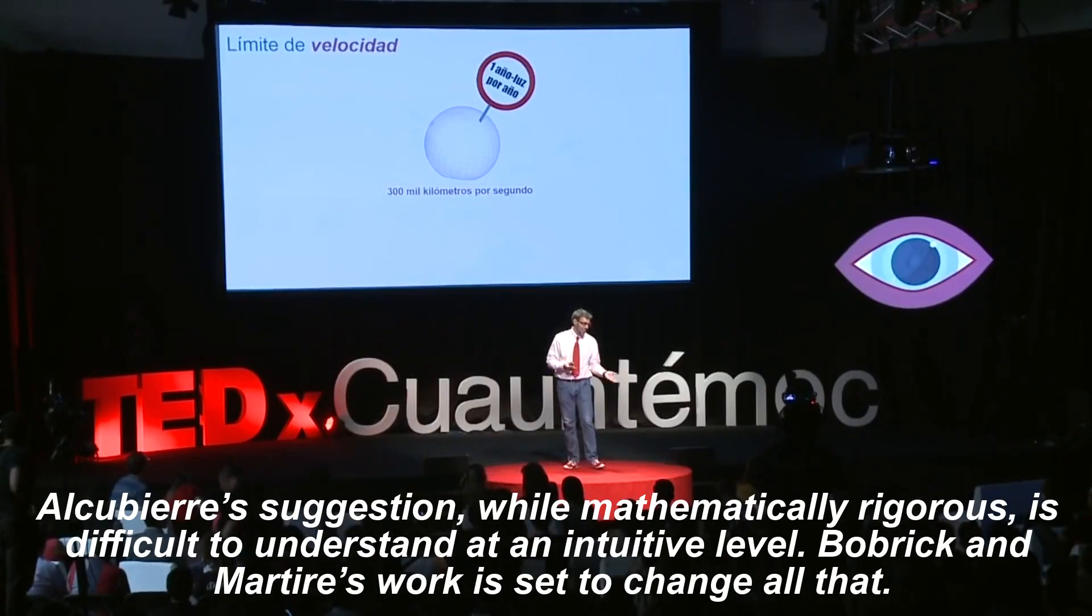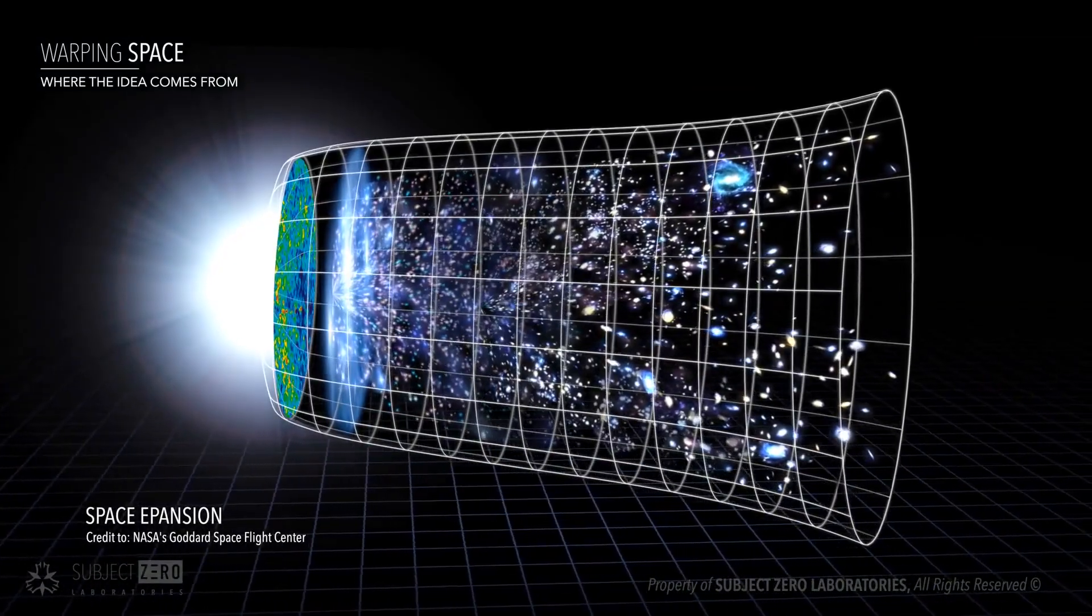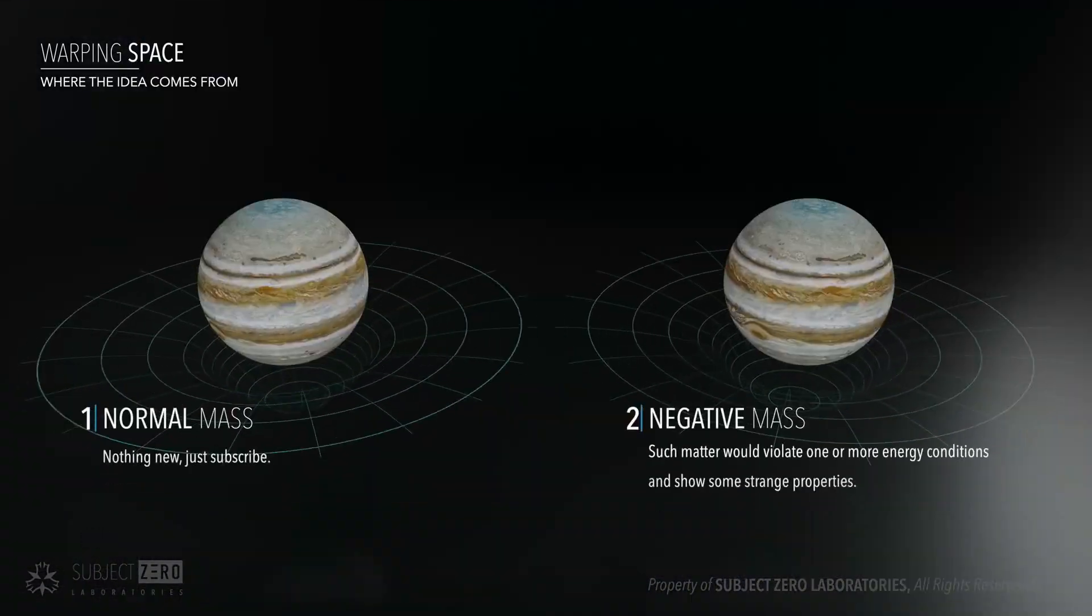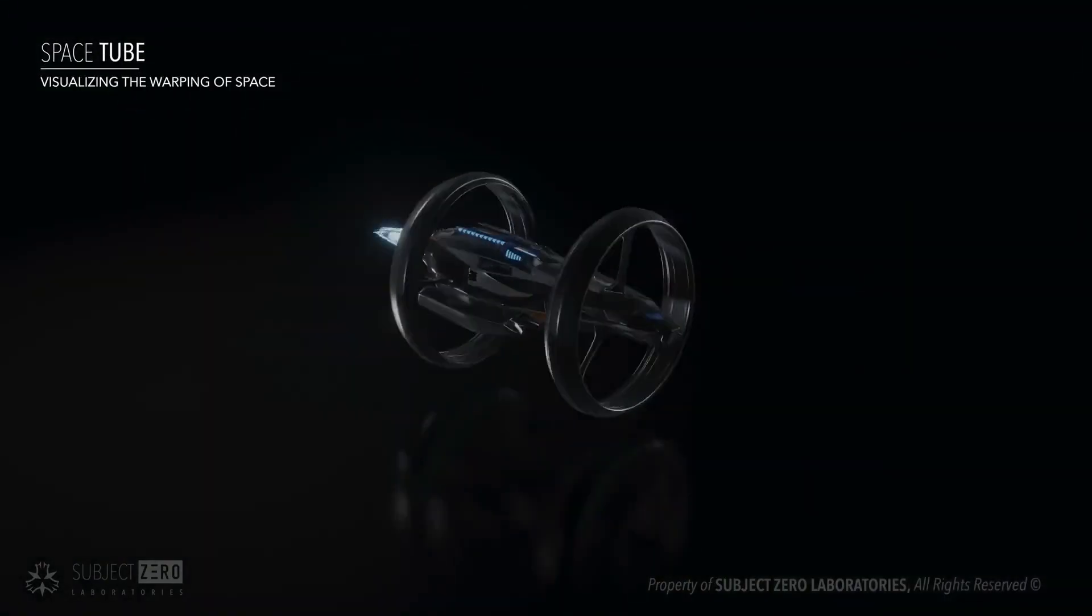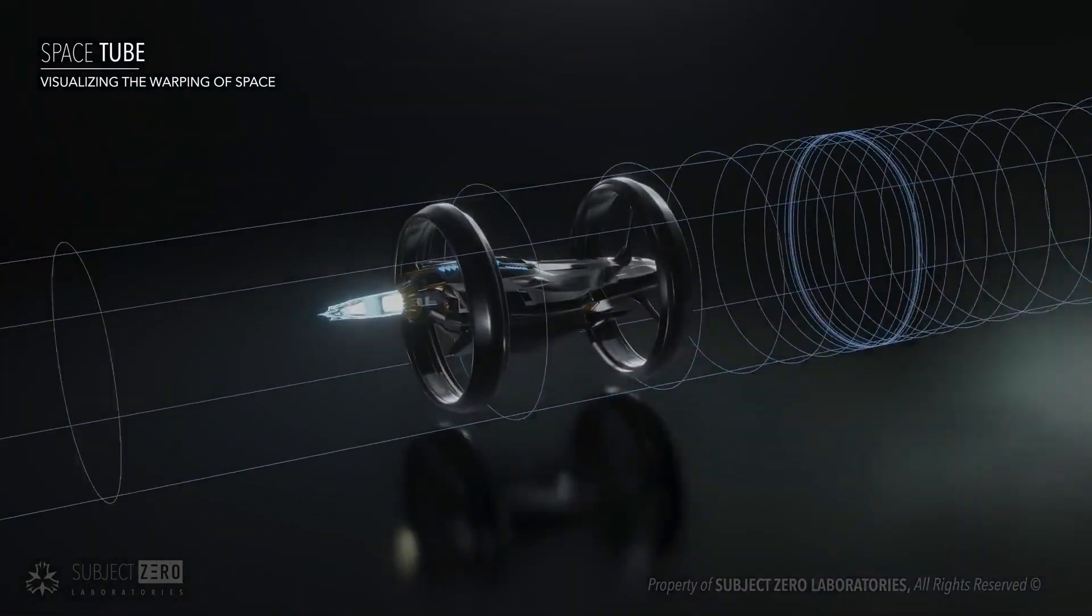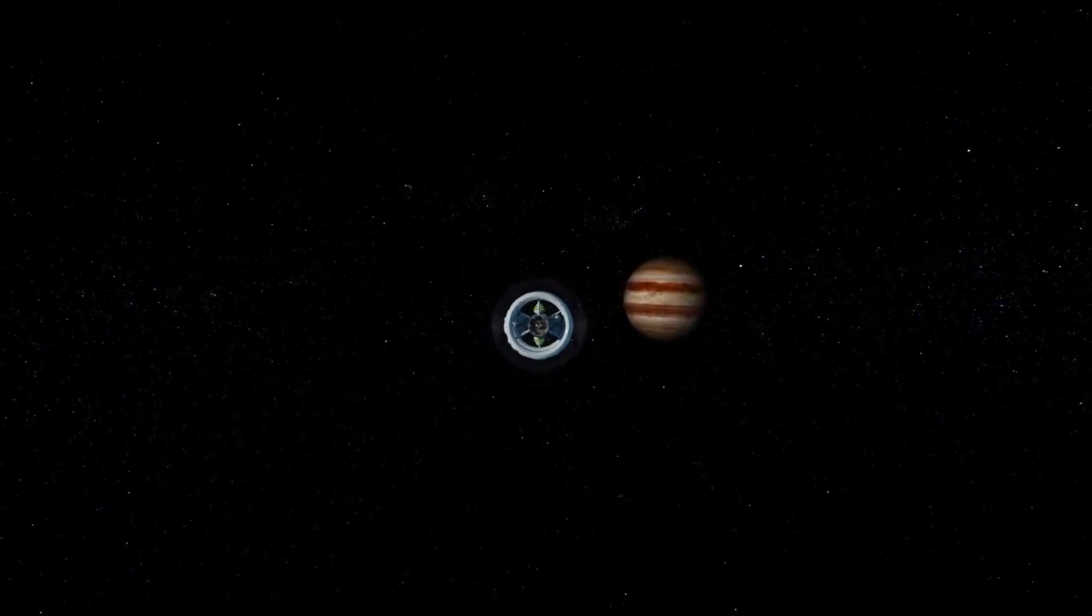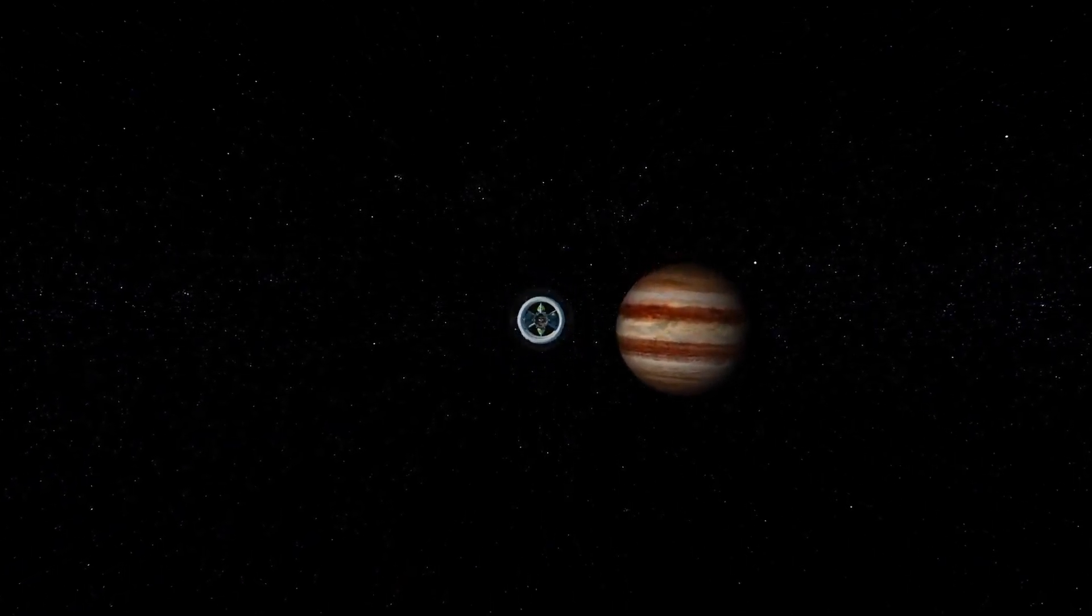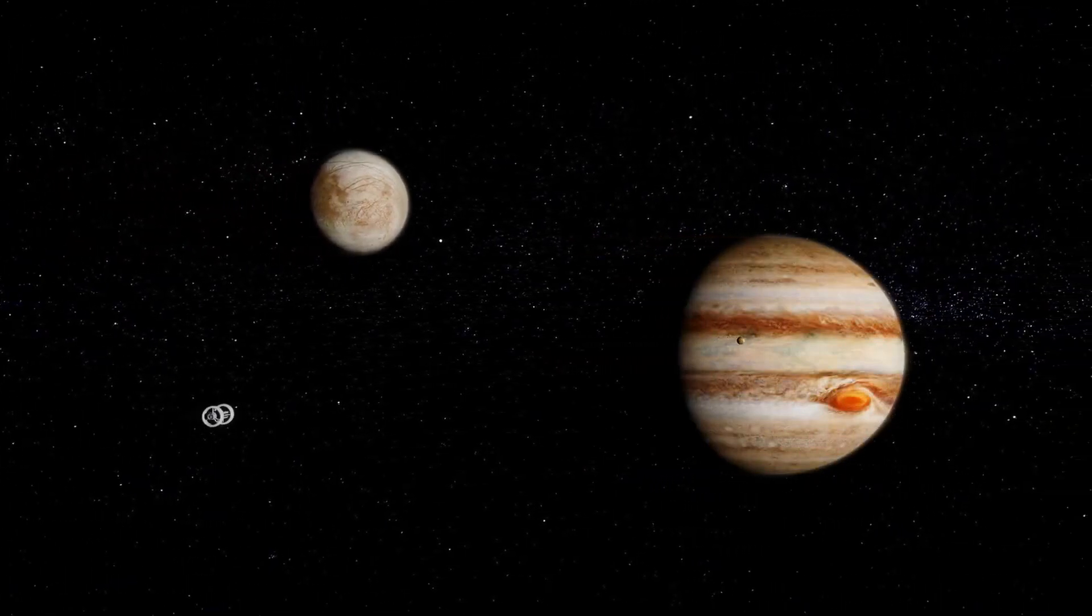Bobrick and Martire's work is said to change all that. Bobrick and Martire show that any warp drive must be a shell of material in a constant state of motion, enclosing a flat region of space-time. The energy of the shell modifies the properties of the space-time region inside it. This might not sound like much of a discovery, but until now it was unclear that warp drives might be physically possible.